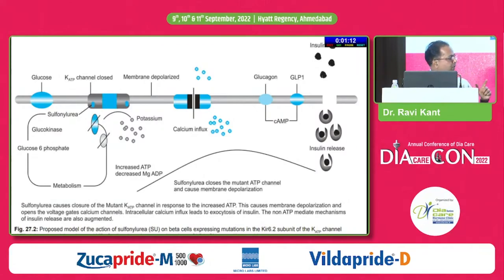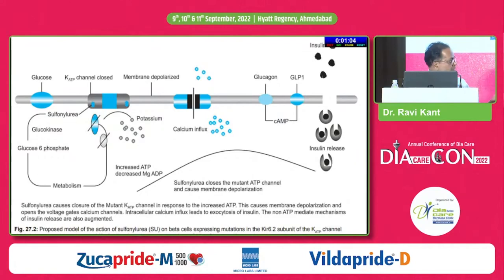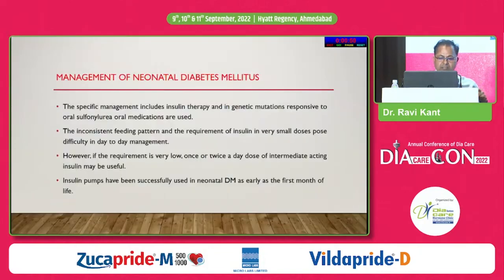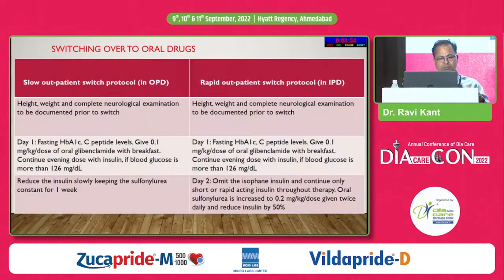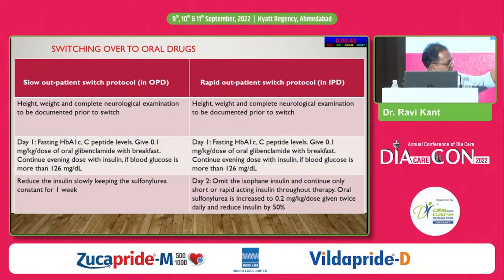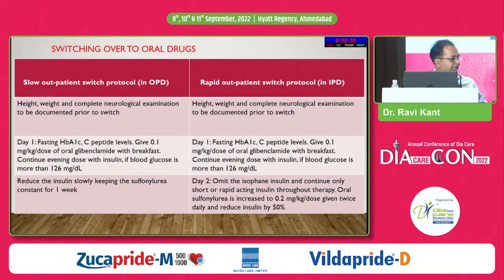Why is sulfonylurea preferred? Because sulfonylurea receptors are also found in the brain. If you treat with insulin, you are going to have developmental delay in the neonate rather than with sulfonylurea — sulfonylurea reduces the chances of developmental delay. Regarding how to switch from insulin to sulfonylurea OHA: there is a slow outpatient switch protocol and a rapid one. In the rapid protocol, we switch from insulin to OHA in five days. In the slow protocol, we increase the dose of OHA on a weekly basis, taking approximately four weeks to build up to the maximum dose of sulfonylurea.